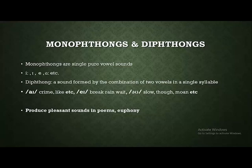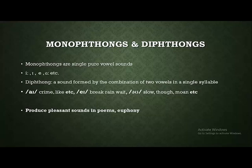The next elements we analyze at the phonological level are monophthongs and diphthongs. Monophthongs are single, pure vowel sounds like /ɪ/, /iː/, /æ/, and /ɑː/. Diphthongs are sounds produced by the combination of two vowels in a single syllable — for example, the diphthong /aɪ/ in words like 'crime' and 'like,' the diphthong /eɪ/ in 'break' and 'rain,' and /əʊ/ in 'slow,' 'though,' and 'moan.'